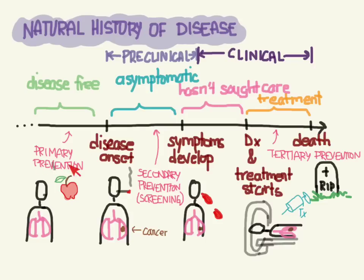So ultimately, primary prevention is best — eat your fruits and veggies, don't smoke, go get some exercise. And secondary prevention is what we're going to talk about here, and that is screening.